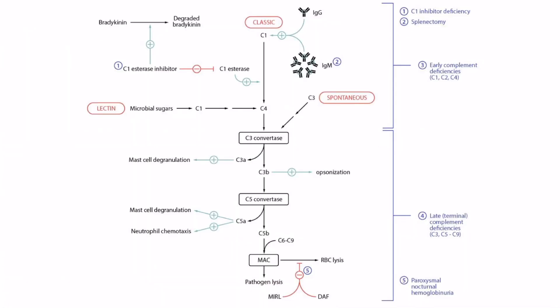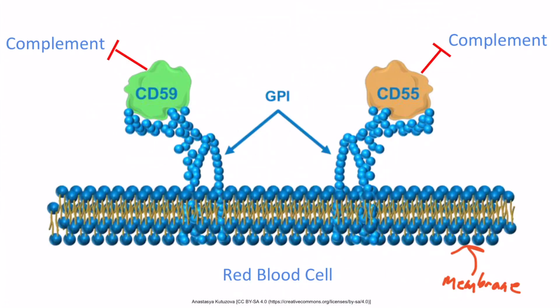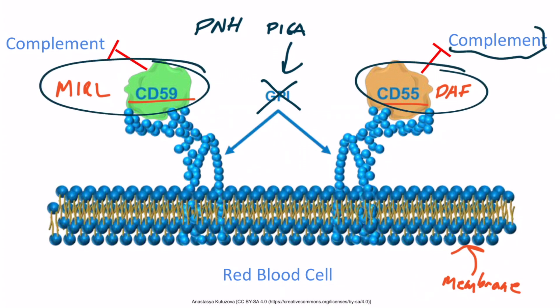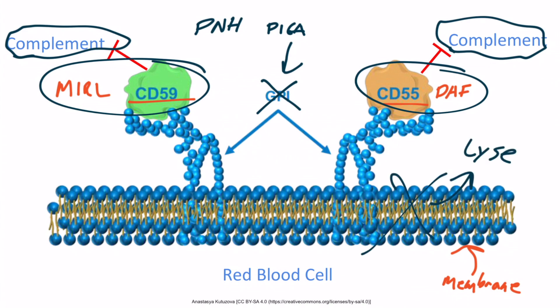On this image, you can see that normally MERL and DAF will inhibit RBC lysis, but when this system fails, patients get paroxysmal nocturnal hemoglobinuria, or PNH. This image shows the red blood cell membrane with CD59, also called MERL, and CD55, also called DAF. DAF stands for Decay Accelerating Factor; MERL stands for Membrane Inhibitor of Reactive Lysis. PNH results from a PIG-A gene mutation, leading to a deficiency in GPI proteins, so there's no way to anchor these important proteins and complement on the red blood cell surface goes unfettered, causing lysis.